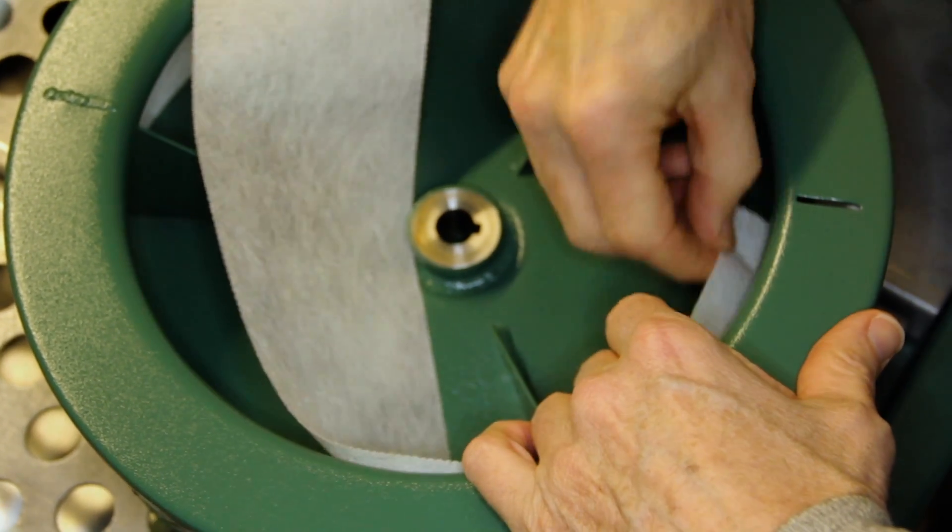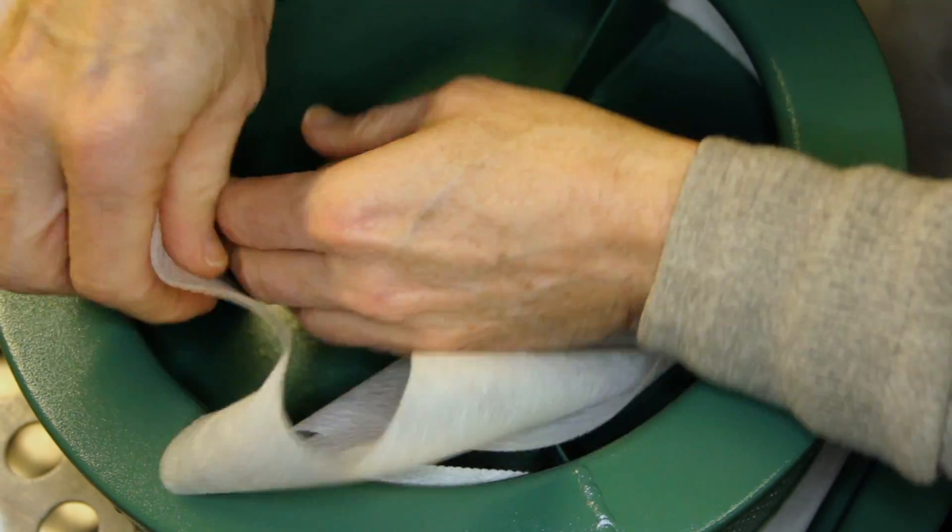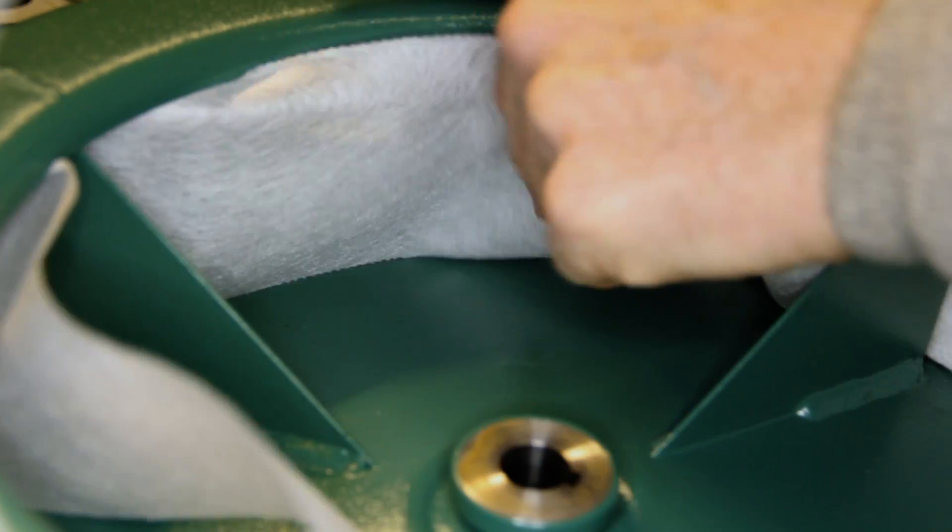The best way to determine if the throwaway liner needs to be changed is to hold it up to the light and see if it is more than 50% blocked with particulate. If it is, then the filter should be changed.